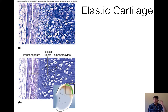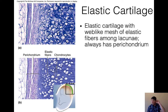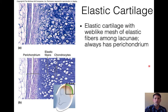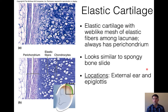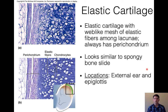Our last cartilage type is elastic cartilage. You can grab your ears and thank your elastic cartilage for keeping them flexible. Elastic cartilage contains elastic fibers, which allow it some flexibility. It has a perichondrium on the outside, and you can see the chondrocytes sitting within their lacunae. We find it in the epiglottis — the flap of cartilage in the larynx that covers the airway when you swallow food and deflects it into the esophagus.